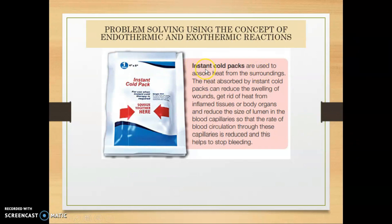Now we continue with the instant cool pack. Instant cool pack is one of the applications of endothermic reaction. Instant cool packs are used to absorb heat from the surrounding. The heat absorbed by an instant cool pack can reduce the swelling of wounds, get rid of heat from injured tissues or body organs, and reduce the size of lumen in the blood capillaries, so that the rate of blood circulation is reduced — and this helps to stop bleeding.